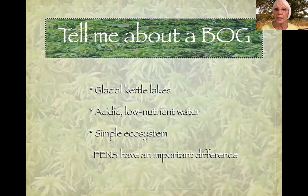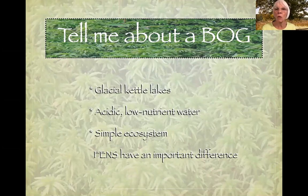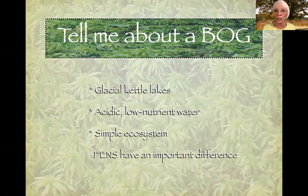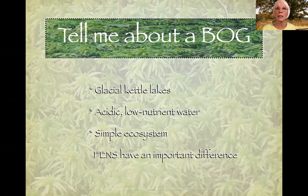Glacial kettle lakes — that's how we define a bog. A large chunk of a receding glacier can break off. It might be covered with glacial till so that it only very slowly melts. While it's there for a very long time, it compresses the land underneath so much that it becomes impermeable to water. No water in that lake can escape to the groundwater, and no groundwater has access to the lake. So evaporated water is replaced only by precipitation, and groundwater flows in around the perimeter of the bog, diluting the acidity.